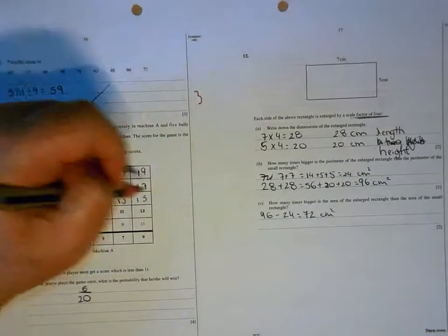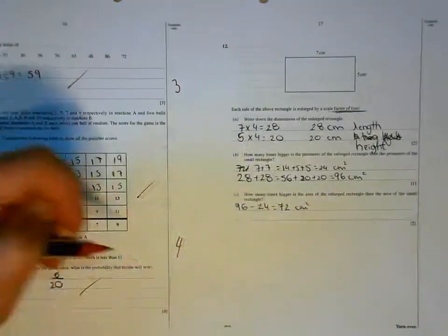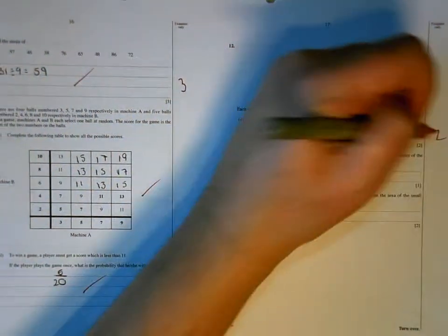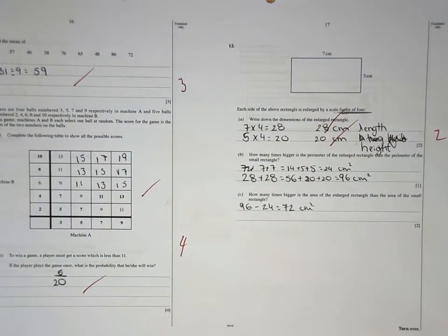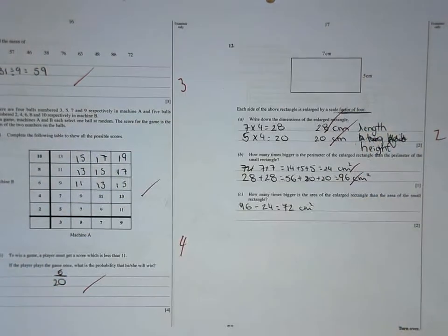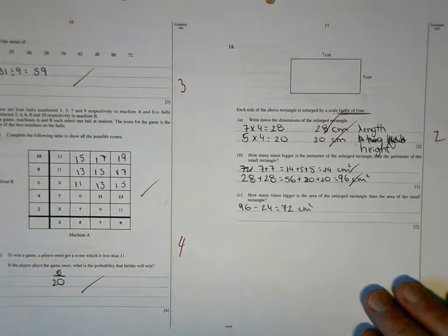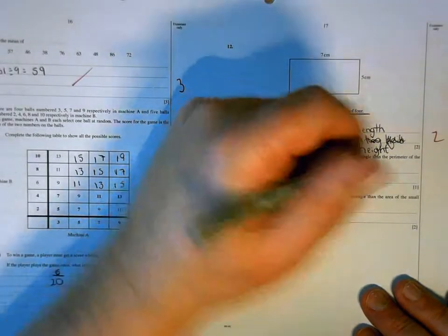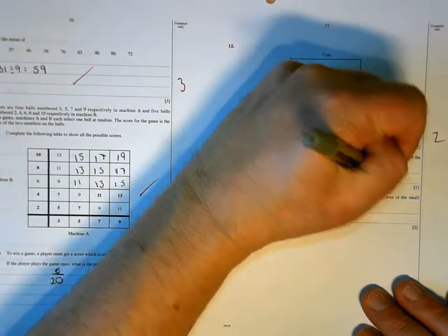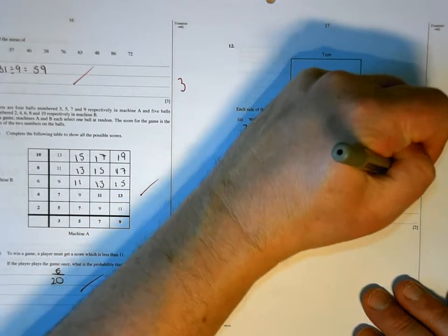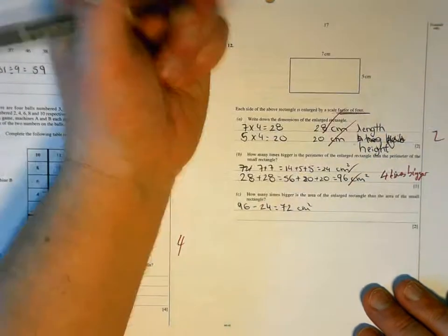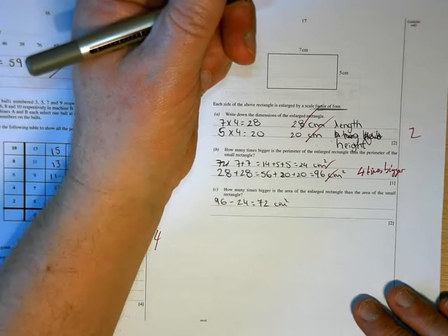59 is correct. Good girl. That's right and that's right. Excellent. 28 and 20 is correct. 24 and 96 are right. But you've then got to say how many times bigger they are. So four times bigger. Not enough with what you've done, unfortunately, to earn you the marks.